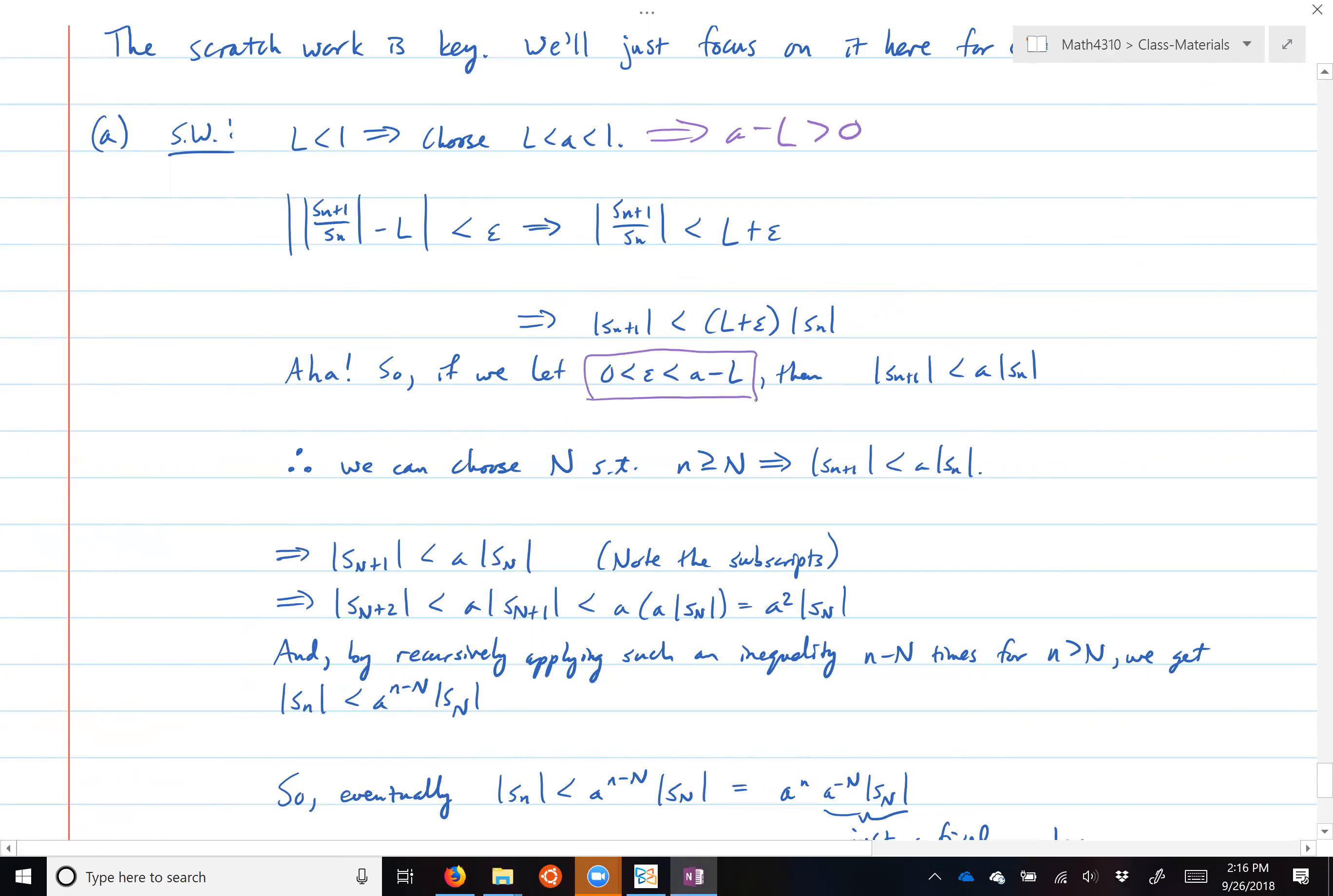So if you restrict epsilon, remember restricting epsilon above is okay, then what this means when you add L to epsilon is that L plus epsilon is then less than A if you've chosen, if you let epsilon be less than A minus L.